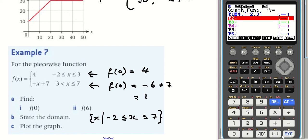Then I do the same for the next one. So negative x plus seven. And I want it to act on the domain where we have x between three and seven. And then I draw it.